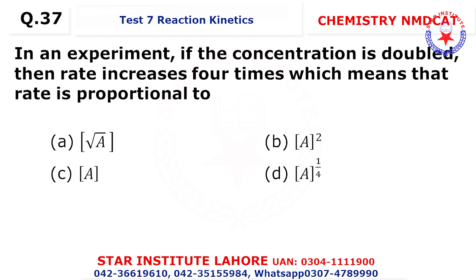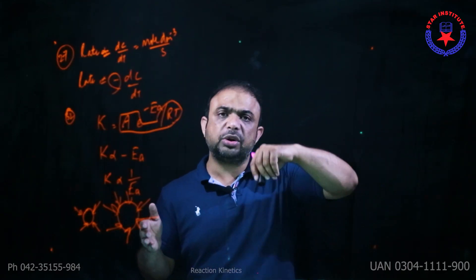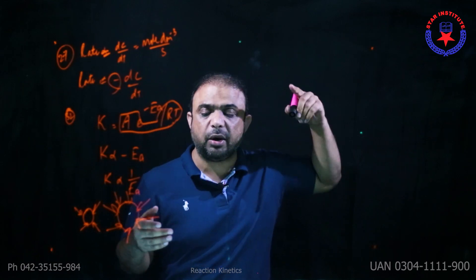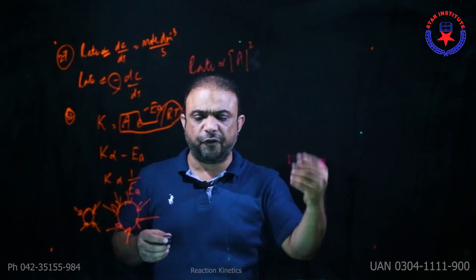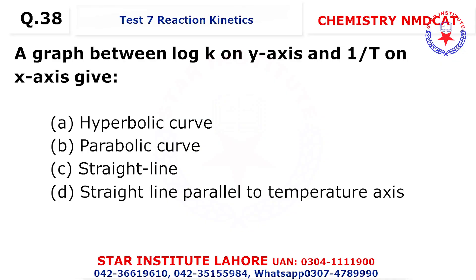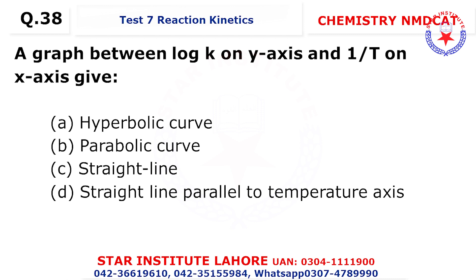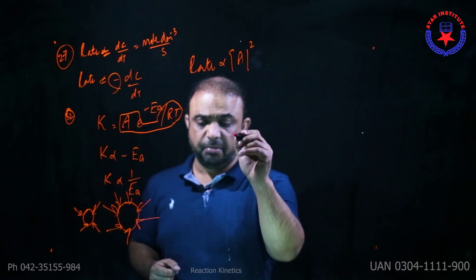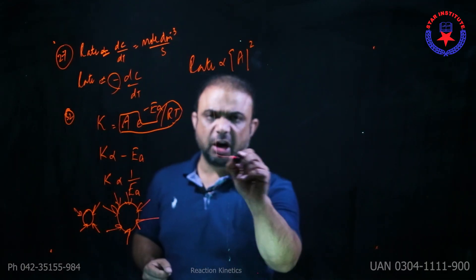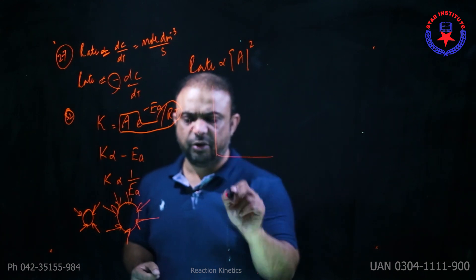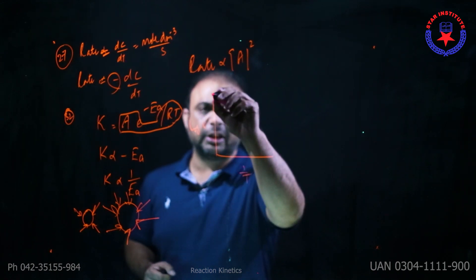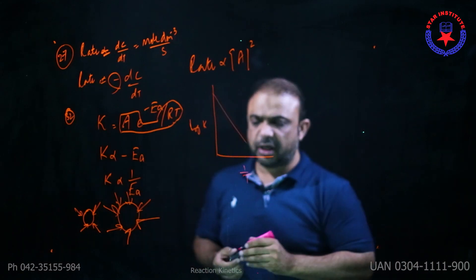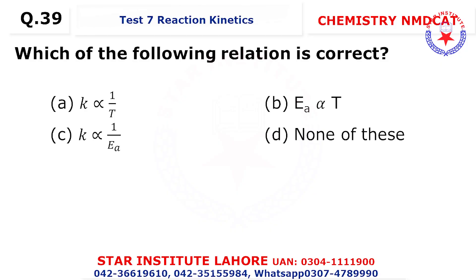Question 37: In an experiment, if concentration is doubled and the rate increases four times, then rate is proportional to concentration squared (second order). Question 38: A graph between log k (y-axis) and 1/T (x-axis) — plotting log k versus 1/T gives a straight line. Temperature has a direct relationship with rate, and 1/T is its inverse — so the graph is a straight line.